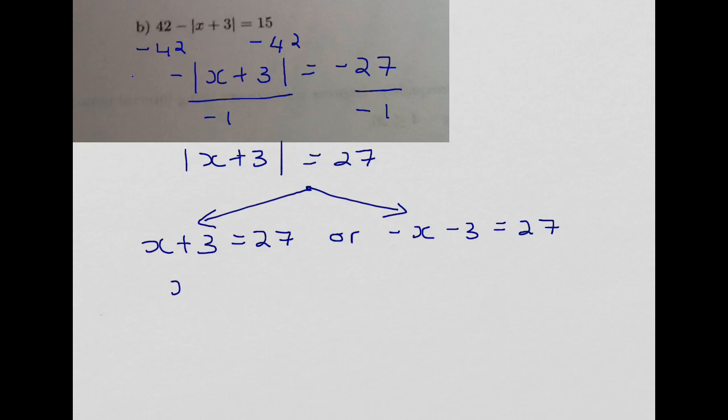Here we solve by undoing the 3 with subtraction, so we get x is 24. Here we have negative x equals 30. When we undo the minus 3 we add 3, then we undo the negative, so x is negative 30, and those are our two answers.